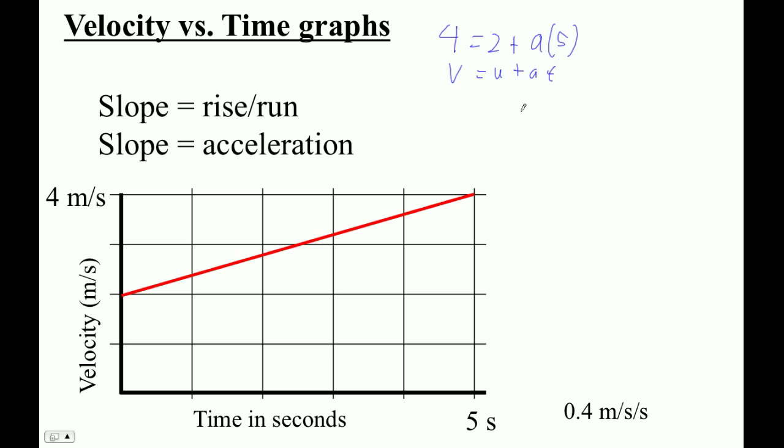Okay, but we can also find the slope of this thing. The rise of this is two, two meters per second. The run is five seconds. And so the slope is rise over run equals two meters per second divided by five seconds, or 0.4 meters per second every second. So slopes are accelerations.